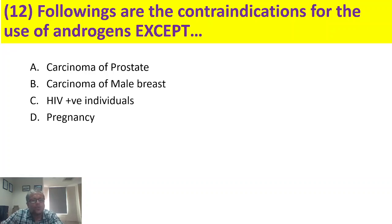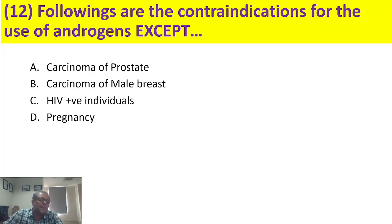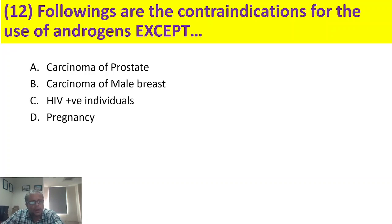Which of the following is not a contraindication for the use of androgens? The options are carcinoma of the prostate, carcinoma of the male breast, HIV-positive individuals, and pregnancy. Carcinoma of the prostate and carcinoma of the male breast are androgen-dependent, so giving androgens would cause cancer progression — these are contraindicated. Pregnancy is obviously a contraindication. However, in HIV/AIDS patients (PLHIV), androgens are actually used to prevent or reverse muscle wasting. So the answer is HIV-positive individuals.